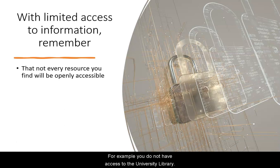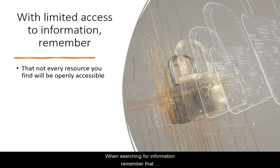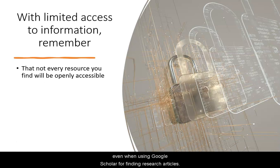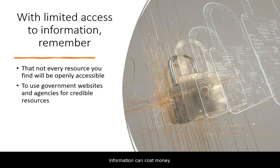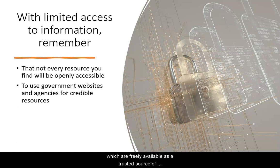For example, you do not have access to a university library. When searching for information, remember that not every resource you find will be openly accessible, even when using Google Scholar for finding research articles. Information can cost money. Use government websites, which are freely available, as a trusted source of information for things like census data or guidelines from small business development centers.